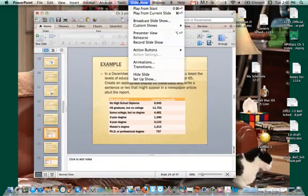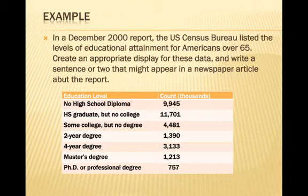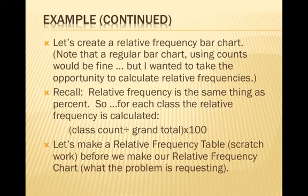Welcome back. We are going to do our examples now. In a December 2000 report, the US Census Bureau listed the levels of educational attainment for Americans over 65. We need to create an appropriate display for these data and write a sentence or two that might appear in a newspaper article about the report. We have counts in thousands and education levels from no high school diploma through PhD or professional degree.